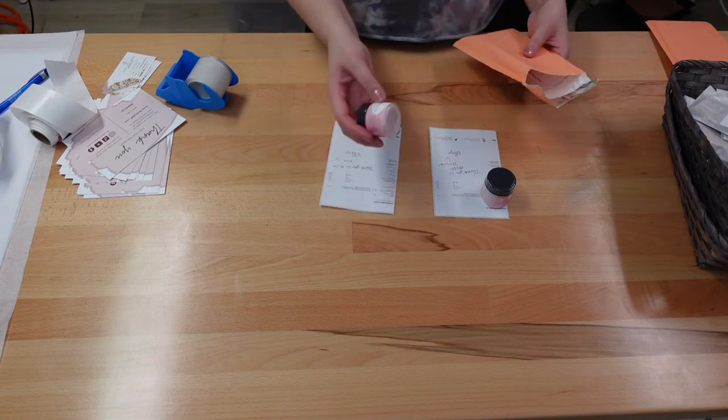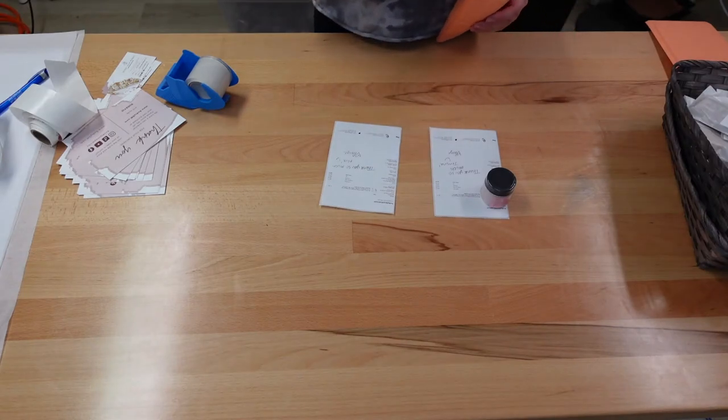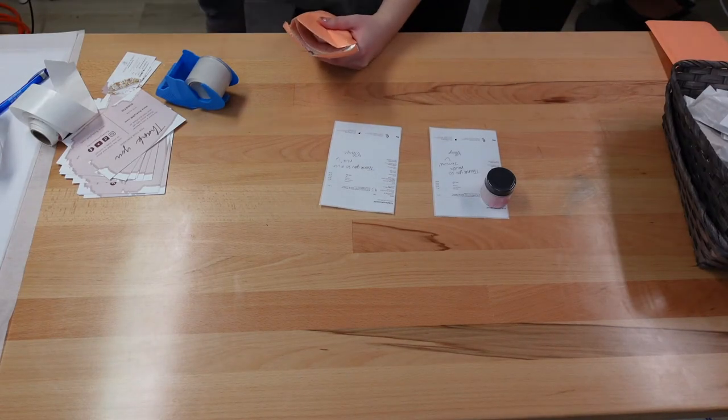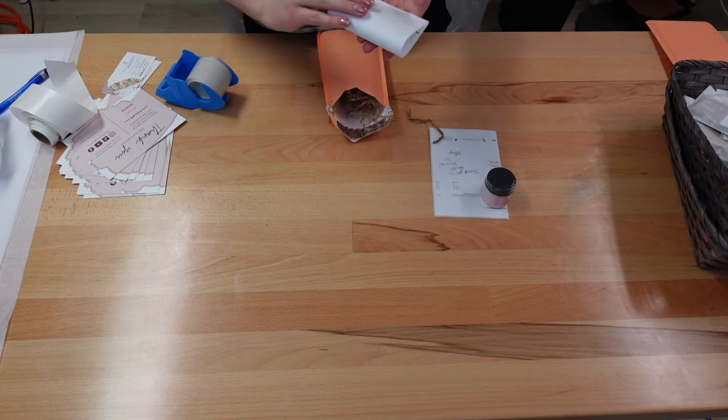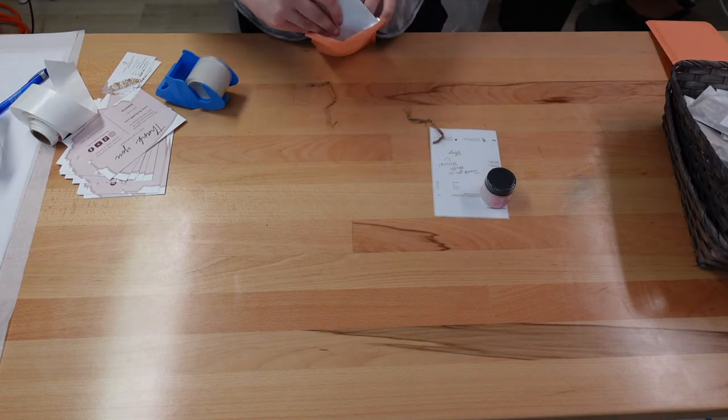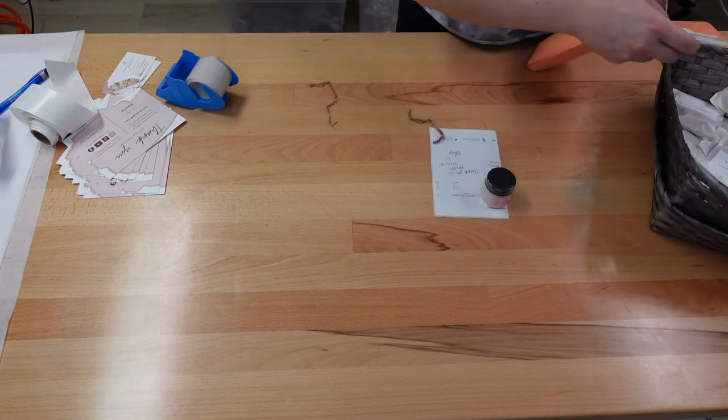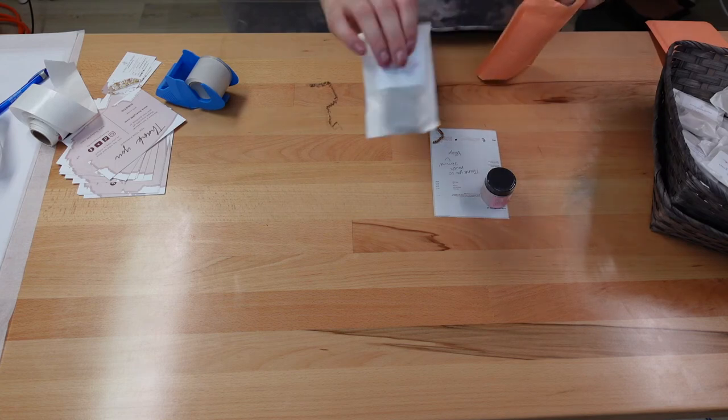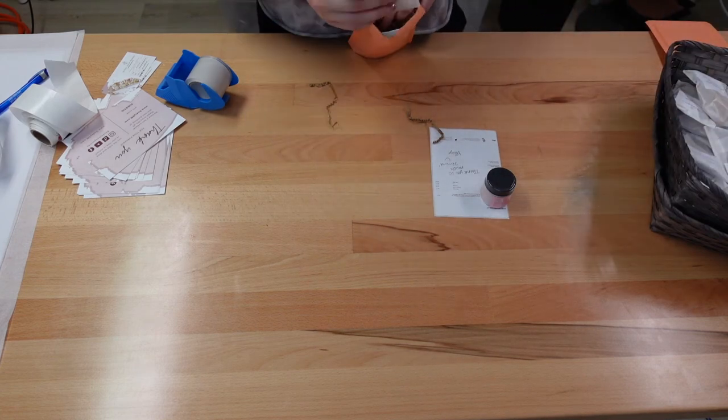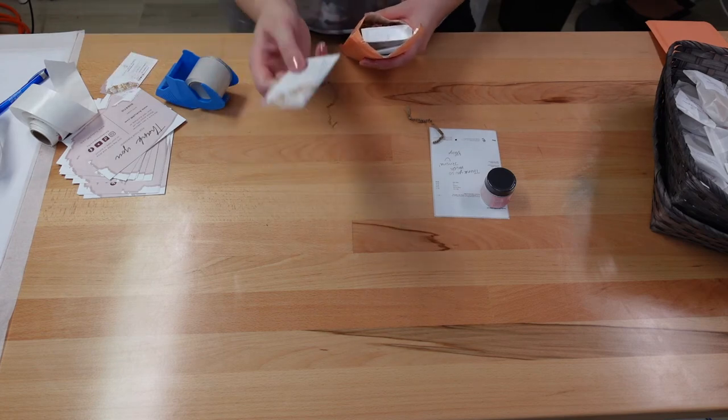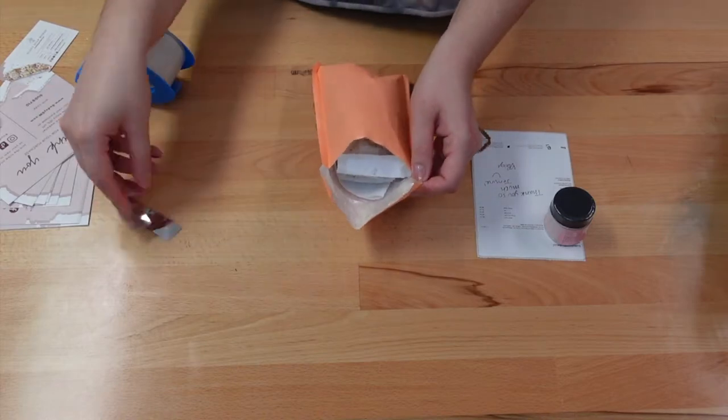There we go. All right, so I'll do Mia's first. So, she ordered the strawberry daiquiri lip scrub. Put that in there with some shred. Hold up her packing slip. And then she will get a pumpkin chai sample and a honey blossom sample. All right, and then the business card.